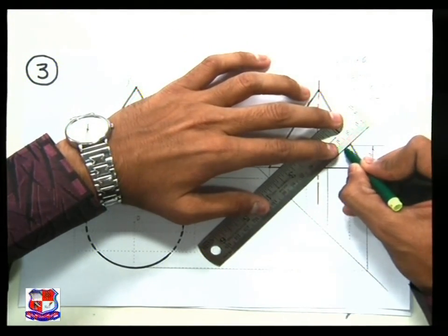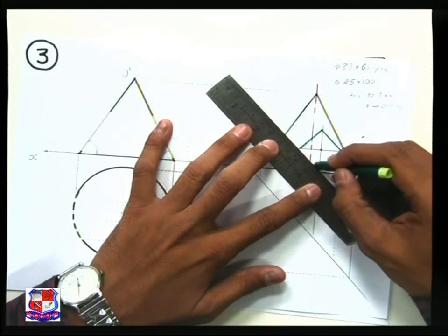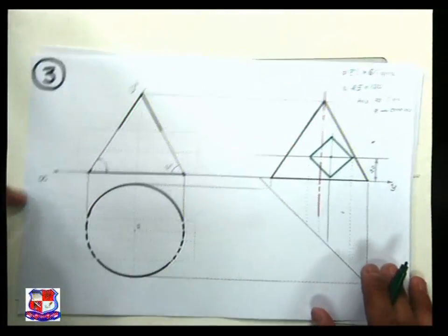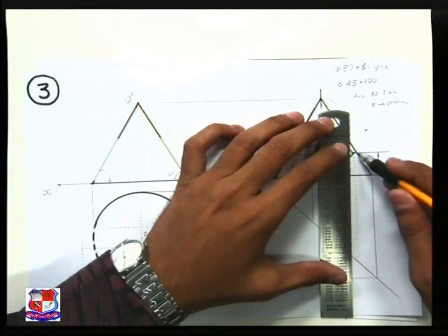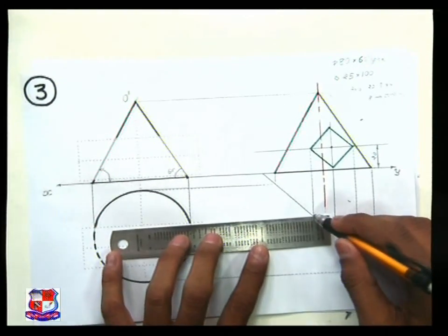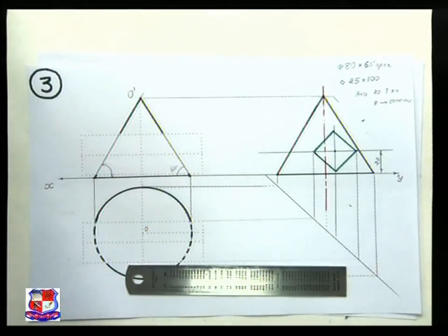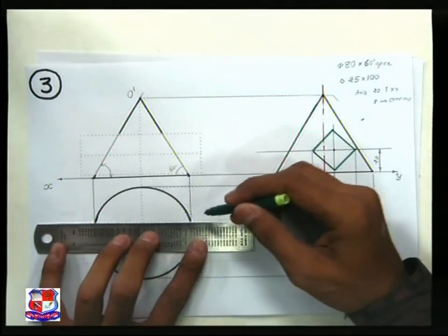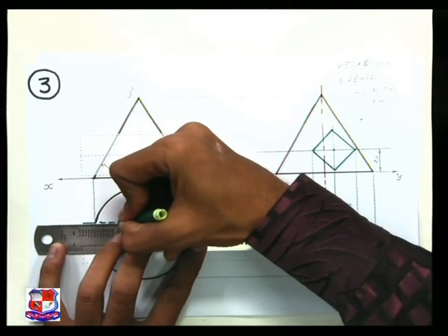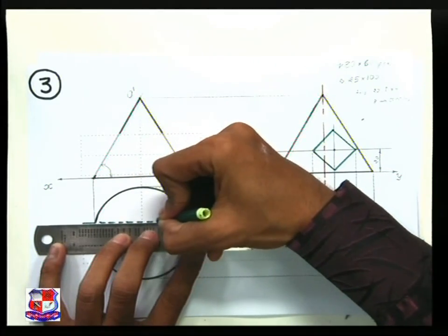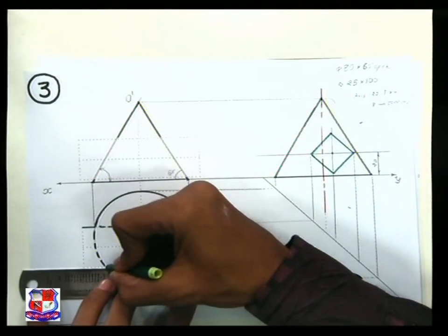Now draw a square prism with this as its axis. It is also given that all its faces are equally inclined to both planes — HP and VP — so it would be drawn in this position where all faces make an angle of 45 degrees with the xy line. This is the side view. Now to draw its front view and top view, take projections: vertical lines from here up to the meter line and horizontal lines from these ends. From that we can draw its top view. It would be visible outside the circle, but inside this circle it would not be visible — up to which end it would be visible, we have to find out.